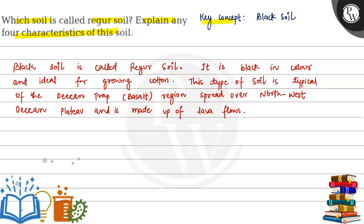So the key concept of this question is black soil. Black soil is called regar soil because it is black in color and ideal for growing cotton. This type of soil is typically of the Deccan trap, that is basalt region, and is spread over the northwest Deccan plateau and is made up of lava flows.